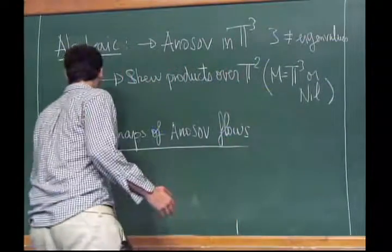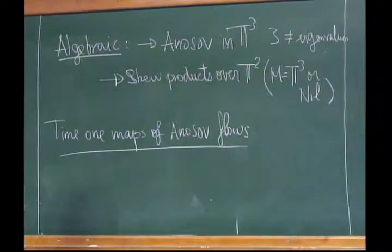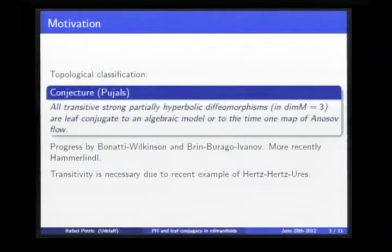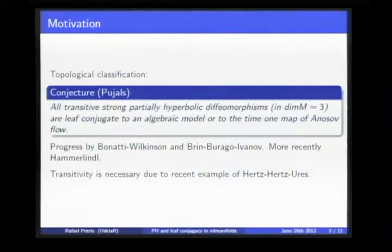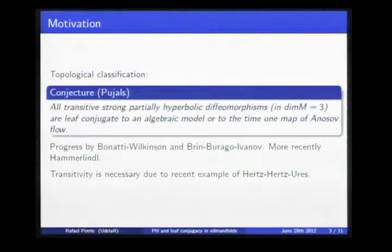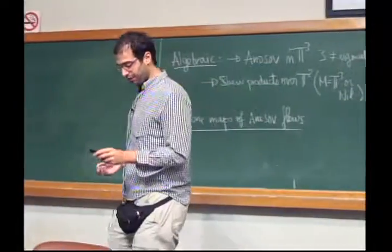The other kind of examples which appear are the time-one maps of an Anosov flow. Before I continue, let me mention some progress on this conjecture. There is a very general result by Christian Bonatti and Amie Wilkinson giving some conditions and evidence on this conjecture, and also very nice work by Brin, Burago and Ivanov which works in other kinds of manifolds. There is also a result by Hammerlindl. The assumption that the partially hyperbolic system is transitive is necessary, due to a recent example.